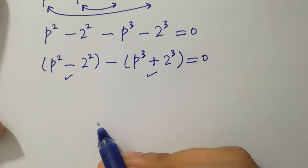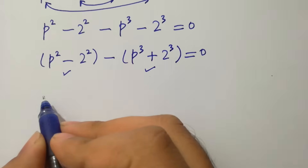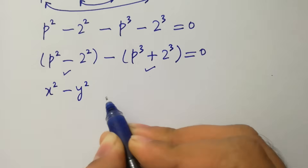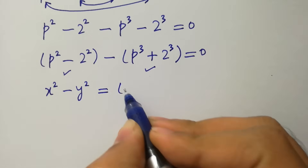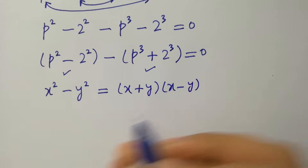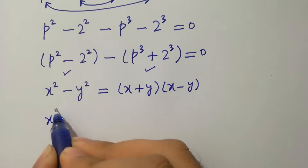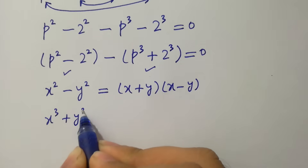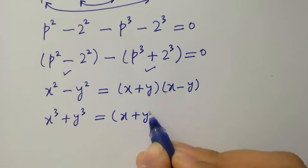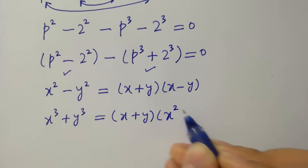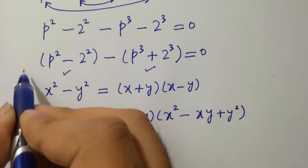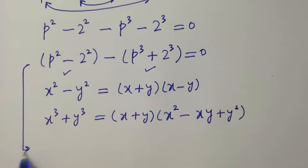For both of these groups we know the formulas: x squared minus y squared equals (x plus y)(x minus y), and x cubed plus y cubed equals (x plus y)(x squared minus xy plus y squared). We will apply these formulas.